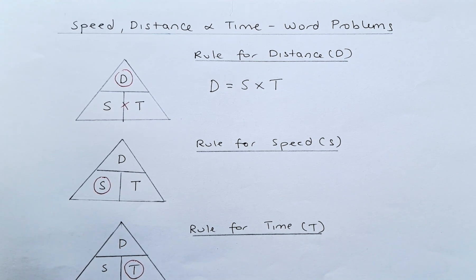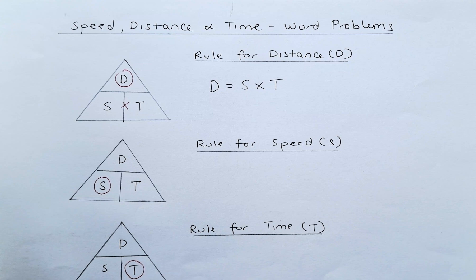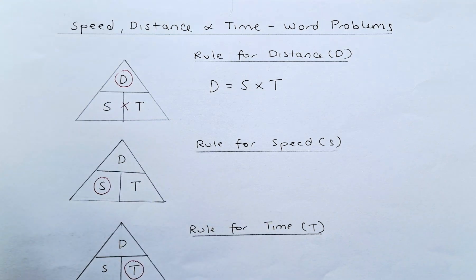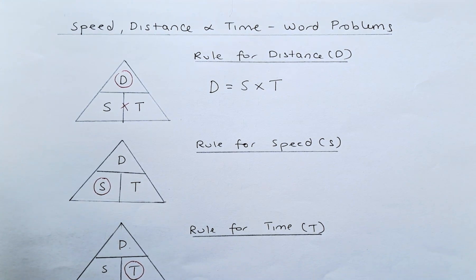To find the rule for distance, we first draw the triangle of DST where D represents the distance, S represents the speed and T represents the time. So to find the distance rule, we're going to circle D because that's what we want to find and we have S and T at the bottom. To calculate the formula, we just multiply the two numbers side by side so it's going to be distance equals to S multiplied by T.